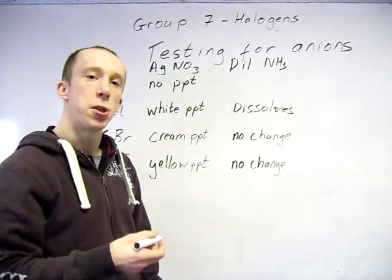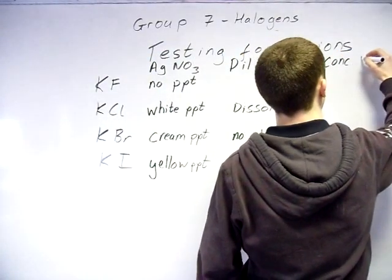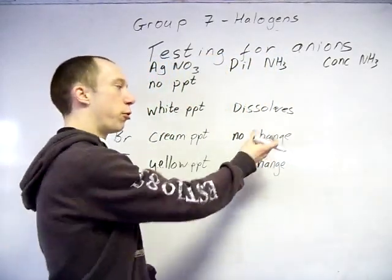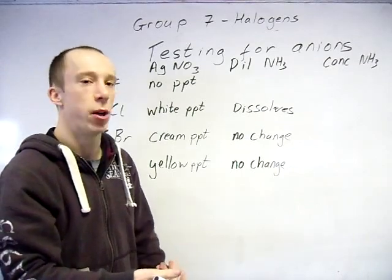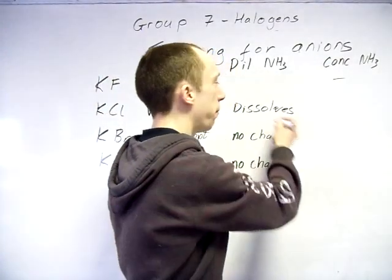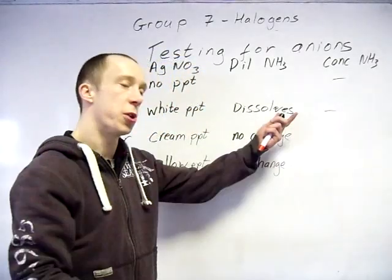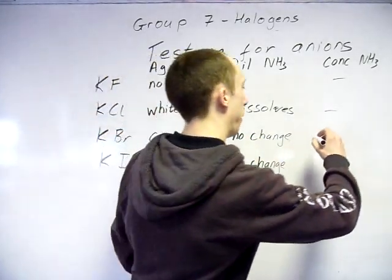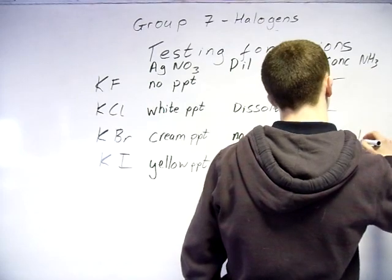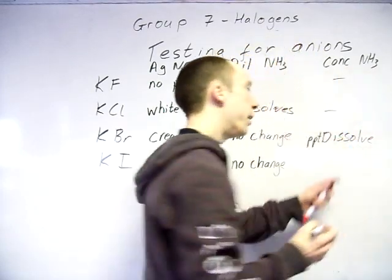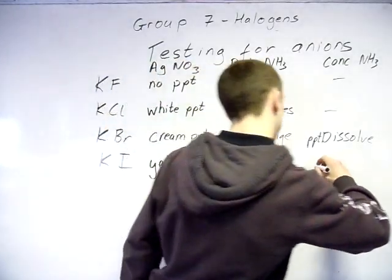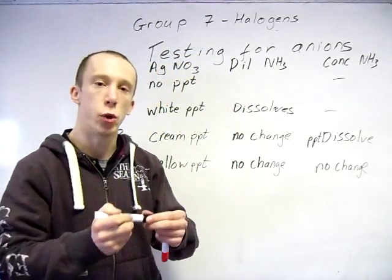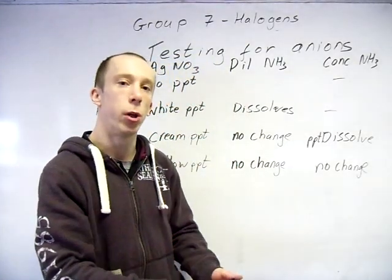So, next, you can add some concentrated ammonia. And this just sort of helps separate out the final two. Cream and yellow, fairly easy to distinguish between, but c'est la vie. So, we don't need it here. Obviously, if that's dissolved, we don't need it there now. It will just stay dissolved. If you add concentrated ammonia to the silver bromide, the precipitate will dissolve now. But, the silver iodide, no change. So, it is the only one which is insoluble all the way through.